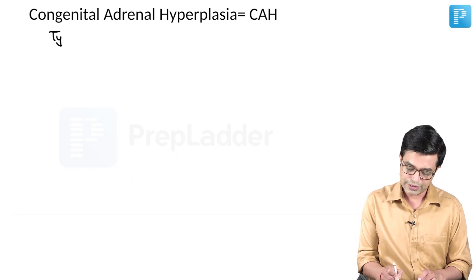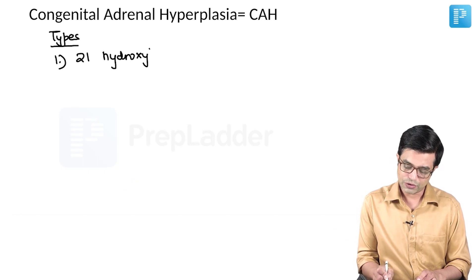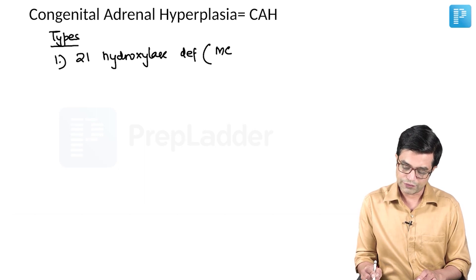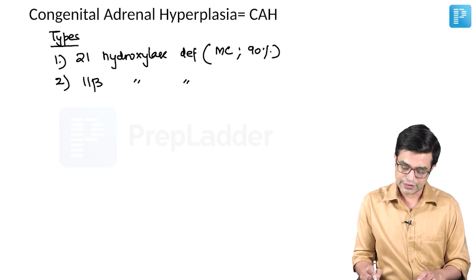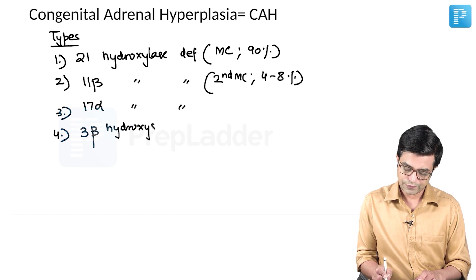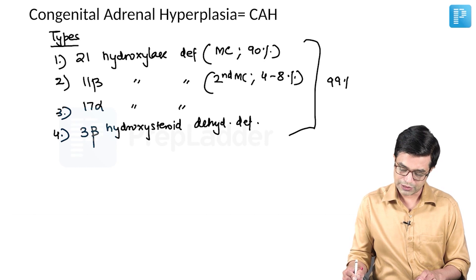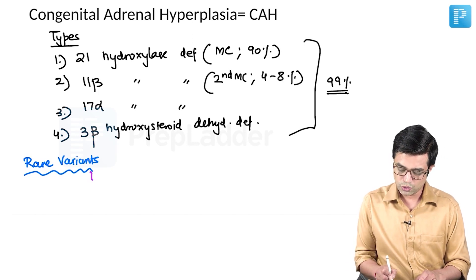The types of CAH depend upon which enzyme is deficient. The first variety is 21-hydroxylase deficiency, considered the most common variety, seen in about 90% of cases. Second is 11-beta hydroxylase deficiency, the second most common, seen in 4 to 8% of cases. Third is 17-alpha hydroxylase deficiency, a rare form. Fourth is 3-beta hydroxysteroid dehydrogenase deficiency. Together these four forms constitute almost 99% of cases, with some rare variants not always included in the classic CAH classification.